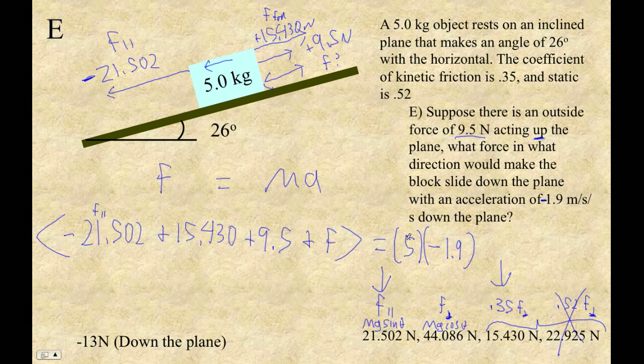Okay, so here we go. So 5 times negative 1.9 minus 9.5 minus 15.43 plus 21.502. Negative force equals negative 12.928 newtons. So let's see. I guess we'd have to say negative 13, which means down the plane. The negative means down. Yay!